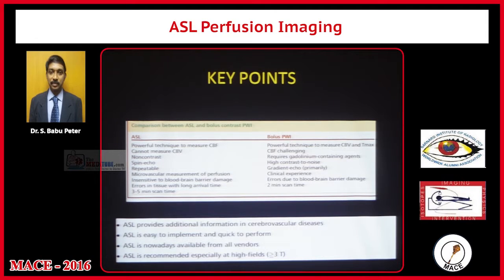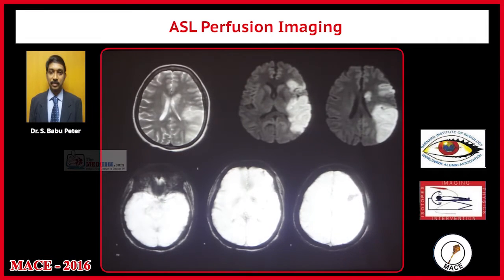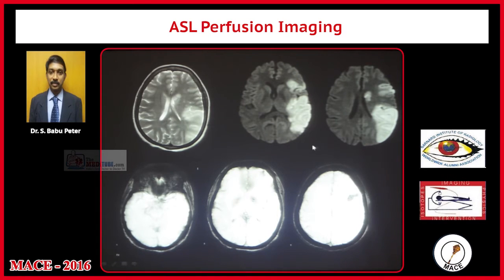The main advantage of ASL is it is now available with all vendors and is generally recommended at higher field strengths — 1.5 or 3 Tesla. This is a typical case of an acute infarct on a T2-weighted image; you see the hyperintense gyral thickening and edema with restricted diffusion, and this is the SWI image that shows a few areas of gradient blooming.